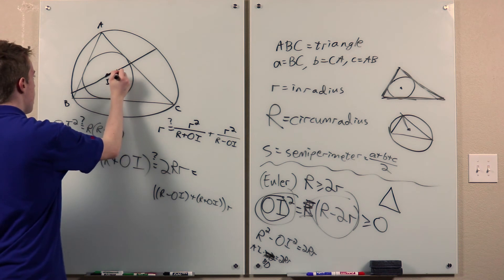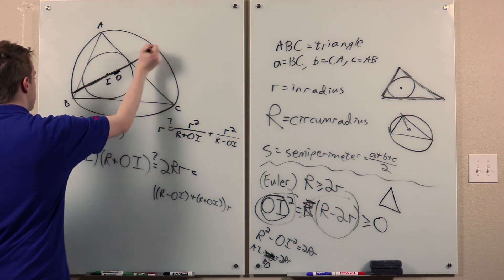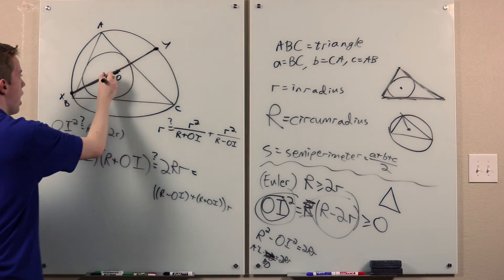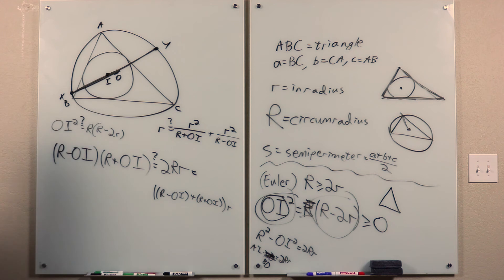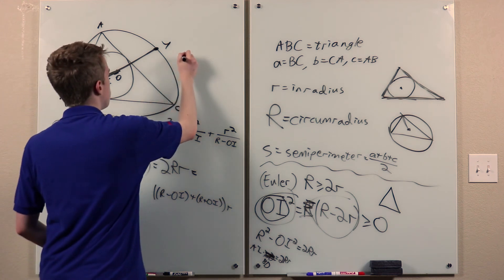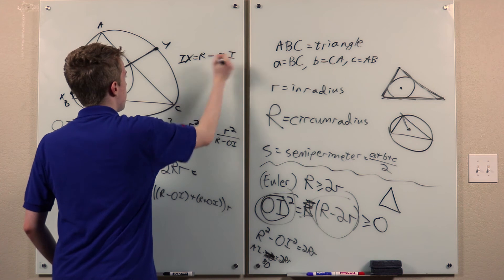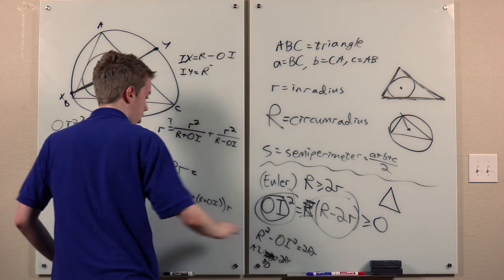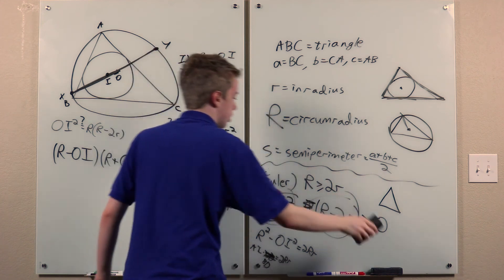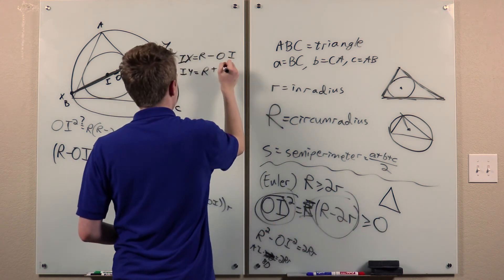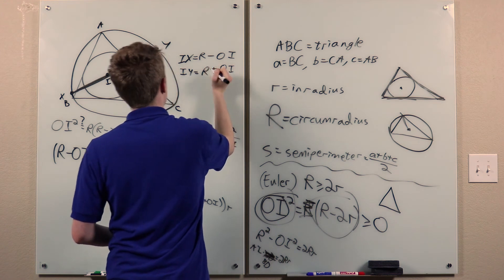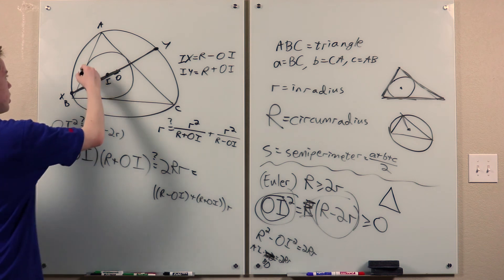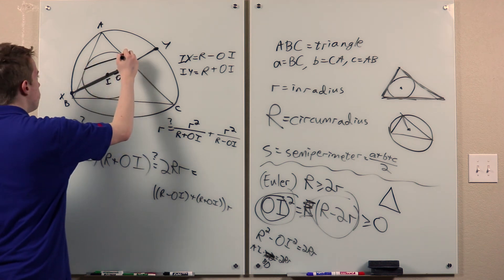So draw this line OI to intersect the circumcircle at two points X and Y, such that I lies on segment OX. Then IX equals R minus OI, and IY equals R plus OI.